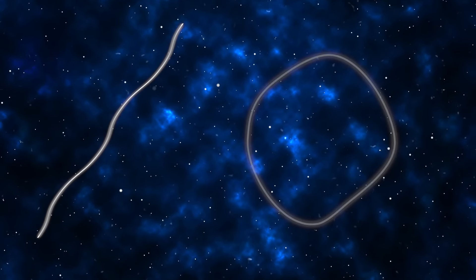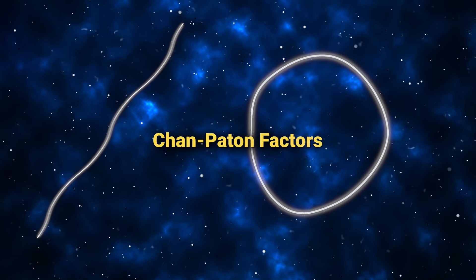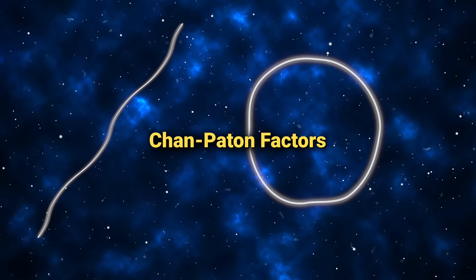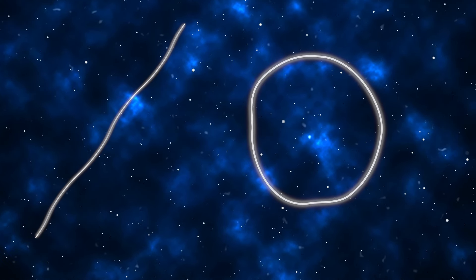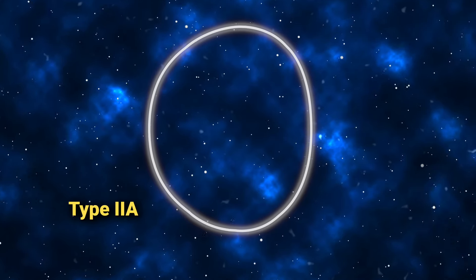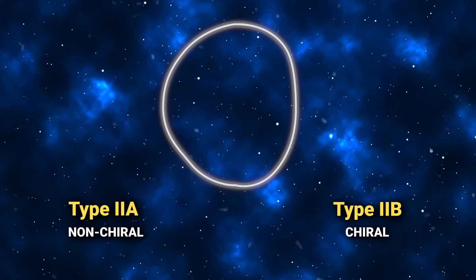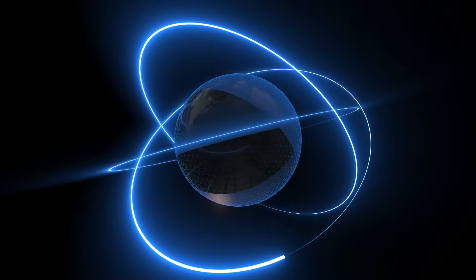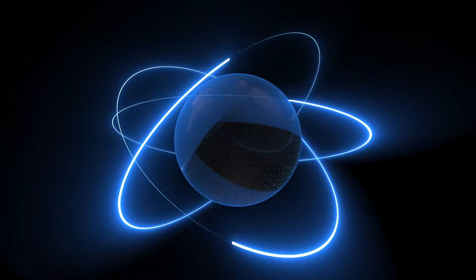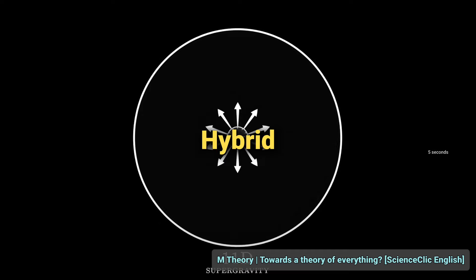Type 1 string theory is characterized by open and closed strings with the gauge group SO32 coming from the Chan-Paton factors at the endpoints of the open strings. Type 2a and type 2b are both closed string theories, with type 2a being non-chiral and type 2b being chiral. The heterotic string theories are based on a hybrid of 26-dimensional bosonic string theory and a 10-dimensional super string theory, also resulting in closed strings. Heterotic actually means hybrid.